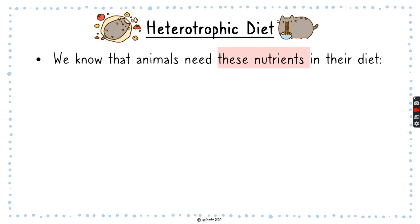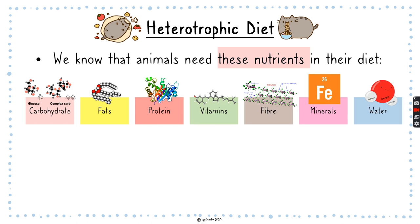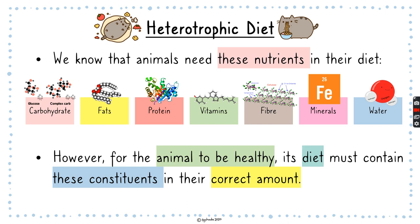Plants, on the other hand, are called autotrophic because they make their own food — we don't make our own food, we eat from other animals and plants, so that's why we call ourselves heterotrophic. The heterotrophic diet: we know that animals need these nutrients — carbohydrate, fat, protein, vitamins, fiber, minerals, and water. For the animal to be healthy, its diet must contain these constituents in the correct amount — no more, no less, just the right amount.